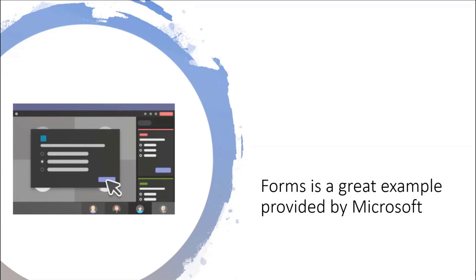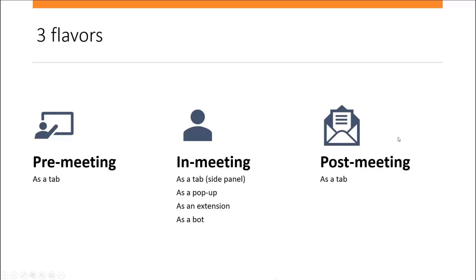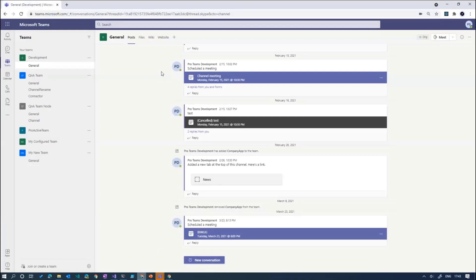You can have a quick walkthrough. You can have a pre-meeting, an in-meeting, and a post-meeting — either as a tab or in the meeting as an extension. Honestly, documentation doesn't do it for me because I need to visualize things. So what I usually do is just open up a meeting.